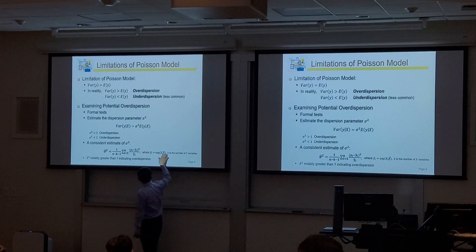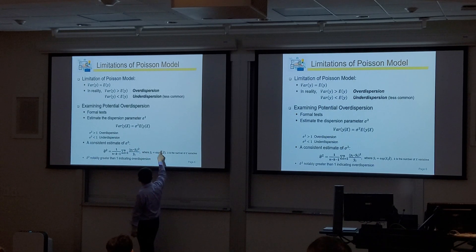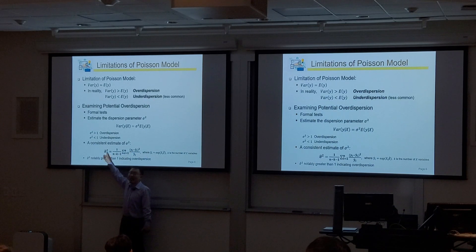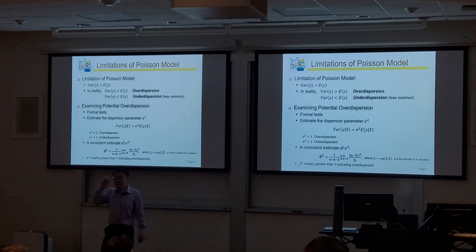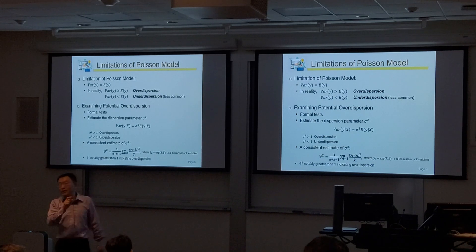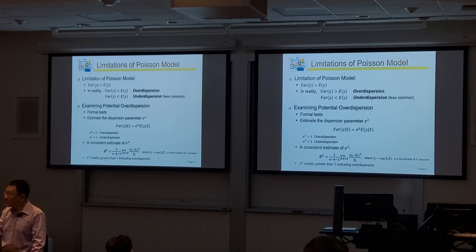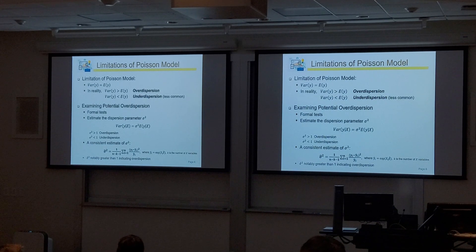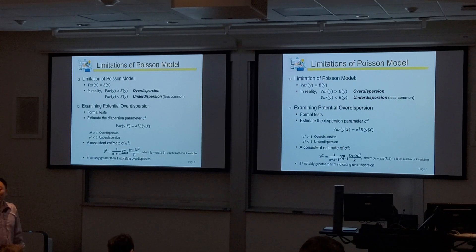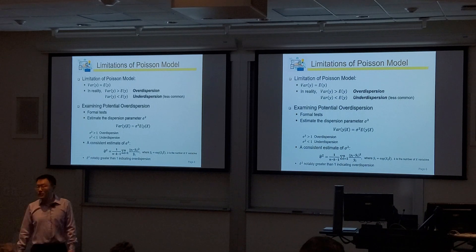After estimating the model, you have the beta coefficients, and for each observation you can do this calculation and get the estimator of sigma-squared. Check whether this sigma-squared is close to 1. If it's close to 1, the Poisson model is fine. If it's significantly greater than 1 — say greater than 5 or 10 — there is over-dispersion.